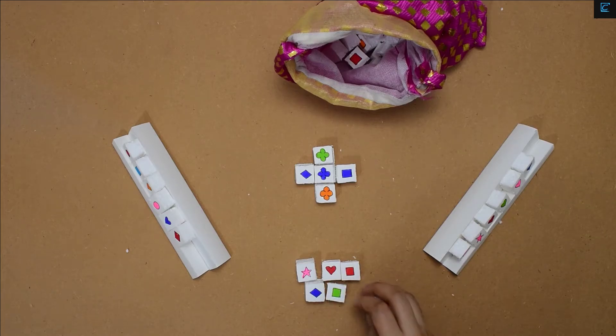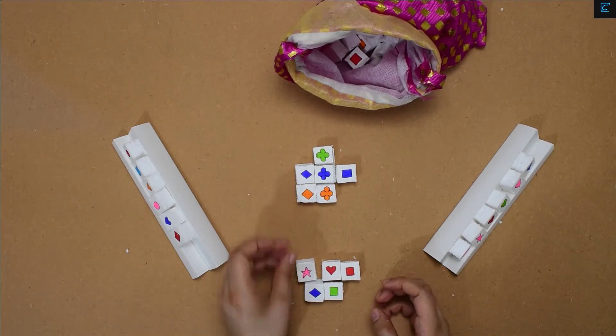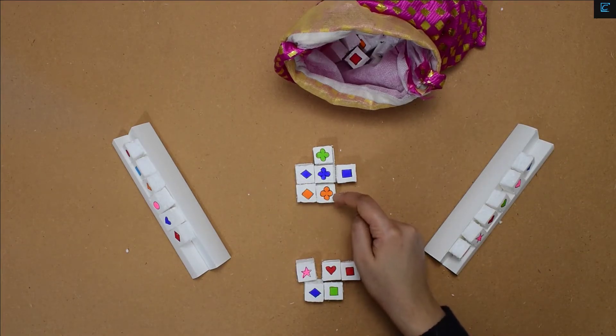Suppose you place a tile that fits into two rows, you get points from both ways. That is two and two, which equals to four points in total.